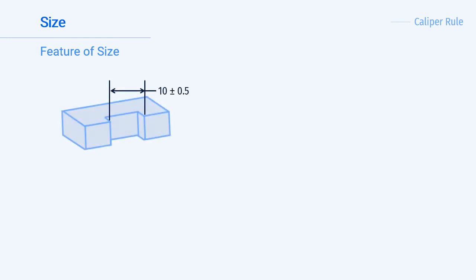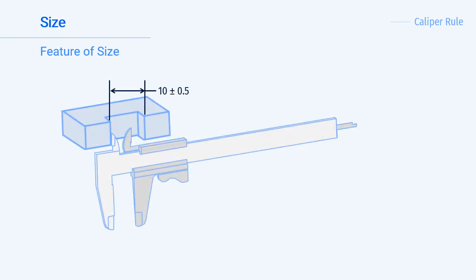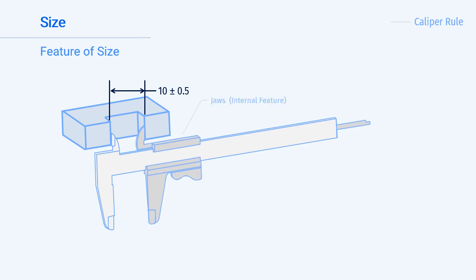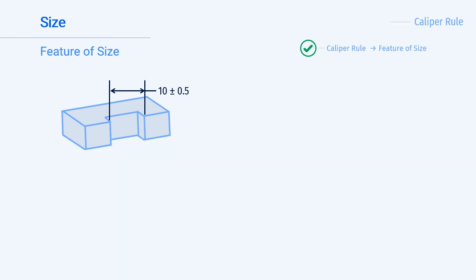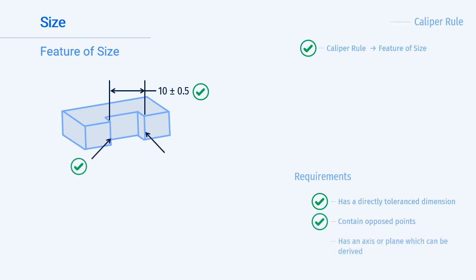Now let's apply the caliper rule to the cutout in the block. The cutout is an internal feature. To measure with a vernier caliper, we would use the jaws for measuring an internal feature. So the caliper rule says that this is a feature of size. Again, checking our requirements: the feature must be directly toleranced, it must have opposing points, and it must have an axis or plane which can be repeatably derived.